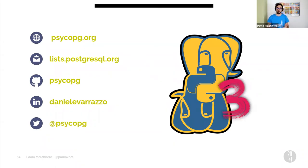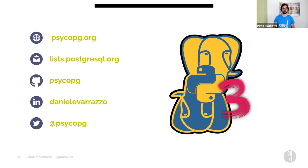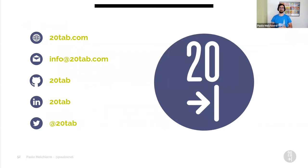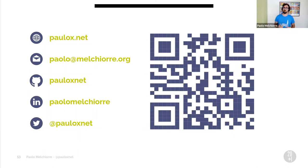The Psycopg library is under active development and you can use the provided contacts to learn more about it, get involved, and sponsor its development. The company I work for, 20tab, is one of the sponsors of this library — the next could be you. In 20tab we have developed many Django projects using Postgres. You can find more about our open source projects and work using the provided contacts. Using the QR code, you can download this presentation from my website. Thanks again for having me, and enjoy the next talk.